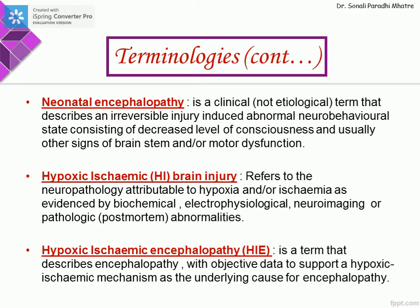Hypoxic ischemic brain injury refers to the neuropathology attributable to hypoxia with or without ischemia, as evidenced by biochemical, electrophysiological, neuroimaging, or pathologic abnormalities. Hypoxic ischemic encephalopathy — HIE — is the term that describes encephalopathy with objective data to support a hypoxic ischemic mechanism as the underlying cause.